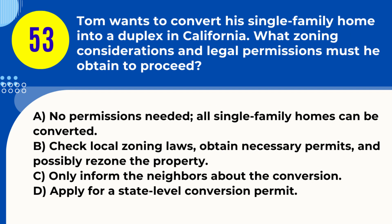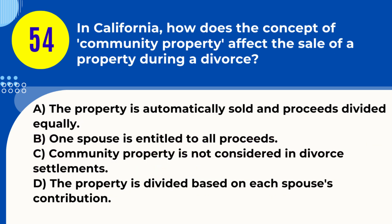Question 53. Tom wants to convert his single-family home into a duplex in California. What zoning considerations and legal permissions must he obtain to proceed? A. No permissions needed; all single-family homes can be converted. B. Check local zoning laws, obtain necessary permits, and possibly rezone the property. C. Only inform the neighbors about the conversion. D. Apply for a state-level conversion permit. Answer: B. Check local zoning laws, obtain necessary permits, and possibly rezone the property. Explanation: Converting a single-family home into a duplex in California requires compliance with local zoning ordinances, obtaining relevant permits, and possibly rezoning.